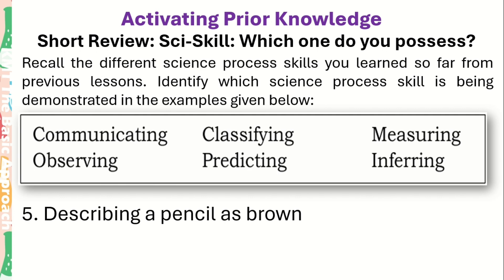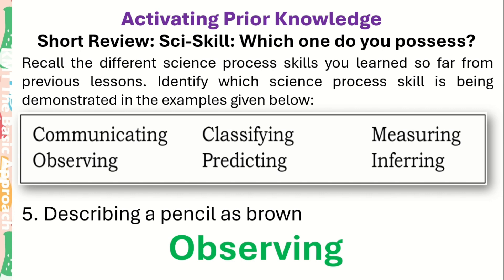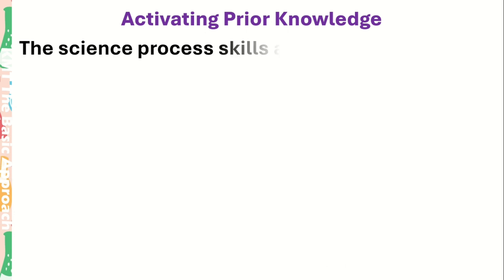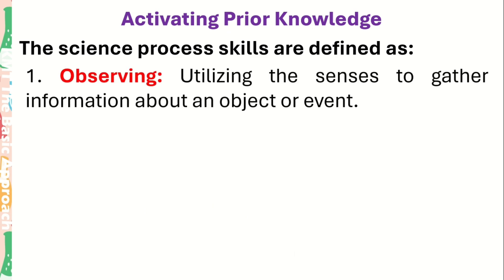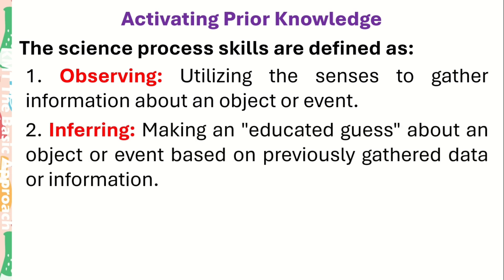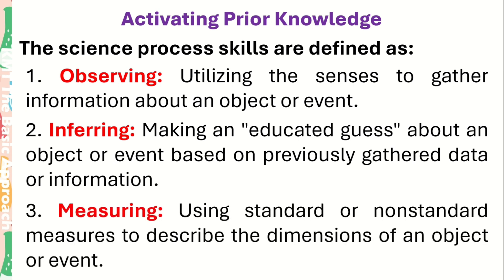Great! The science process skills are defined as: Number 1 — Observing: utilizing the senses to gather information about an object or event. Number 2 — Inferring: making an educated guess about an object or event based on previously gathered data or information. Number 3 — Measuring: using standard or non-standard measures to describe the dimension of an object or event.